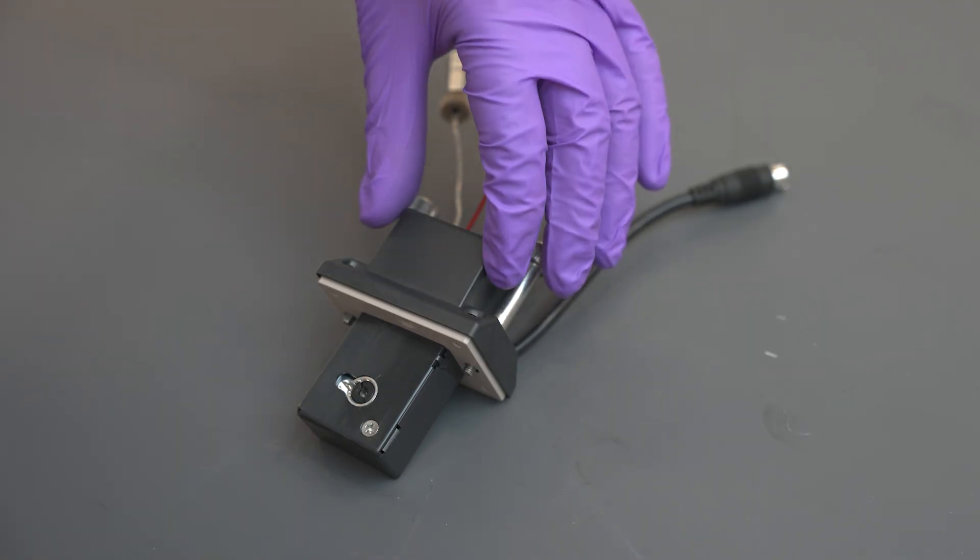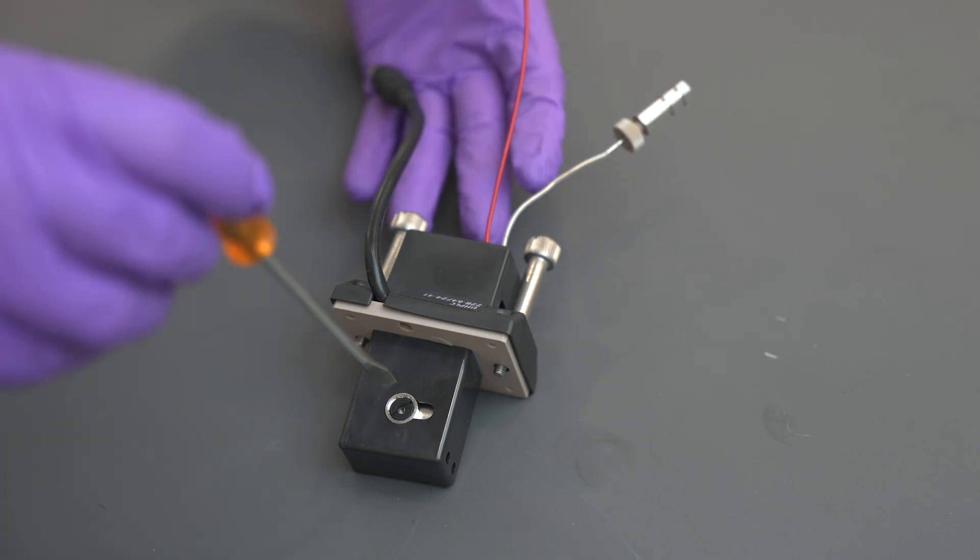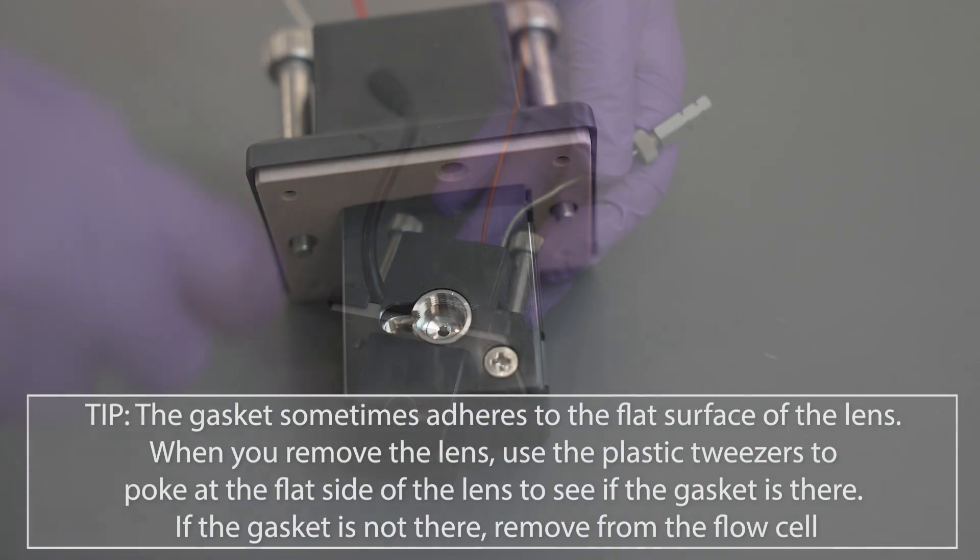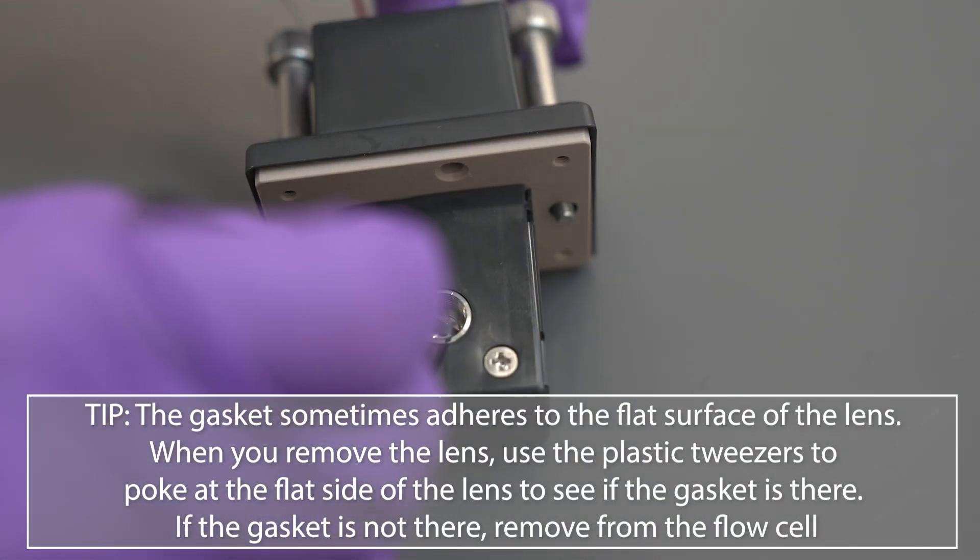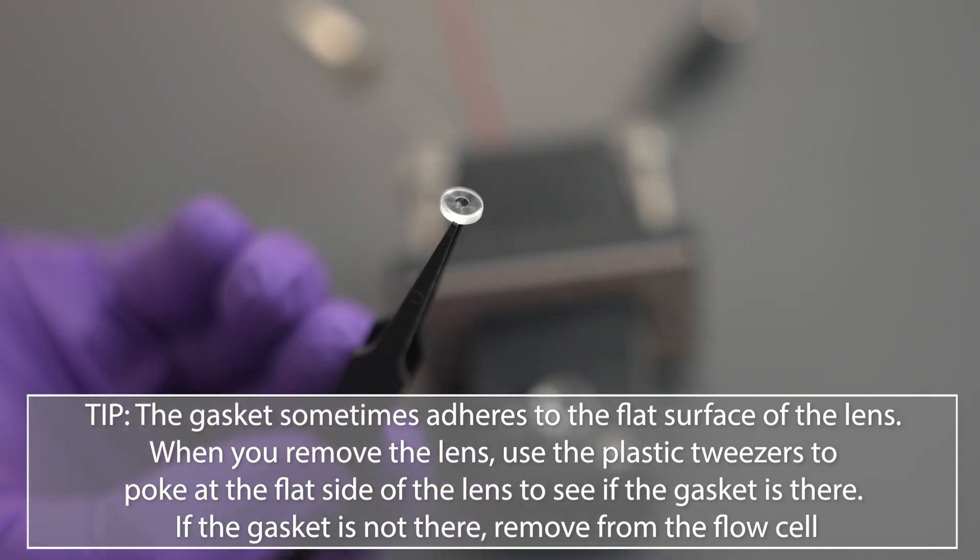Remove the left and right set screws using the flathead screwdriver. Take your plastic tweezers and carefully remove the lenses and gaskets. The gasket sometimes adheres to the flat surface of the lens. When you remove the lens, use the plastic tweezers to poke at the flat side of the lens to see if the gasket is there. If the gasket is not there, remove it from the flow cell.